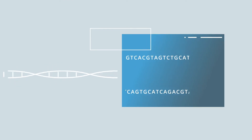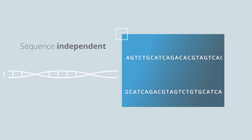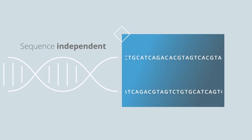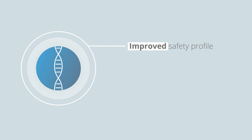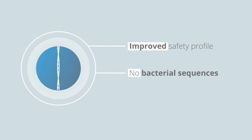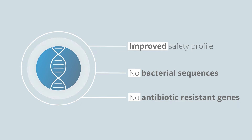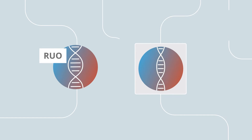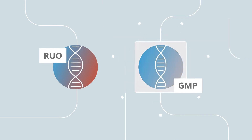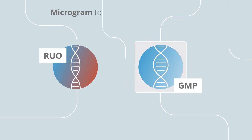Construct manufacture is sequence-independent and with no limitation on size. In comparison with Plasmid DNA, all constructs have an improved safety profile due to a lack of bacterial sequences and antibiotic-resistant genes. 4BaseBio DNA is available in both RUO and GMP grade, in microgram to multigram scale.